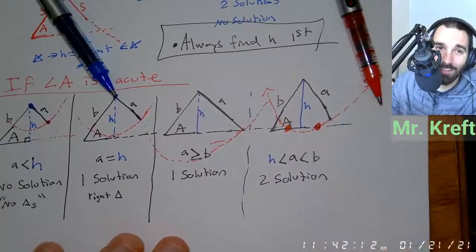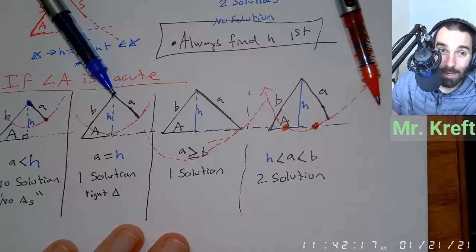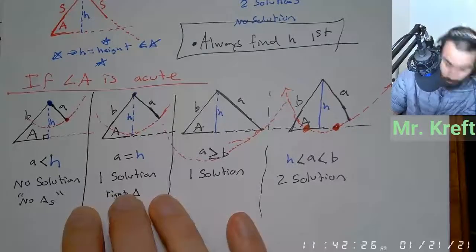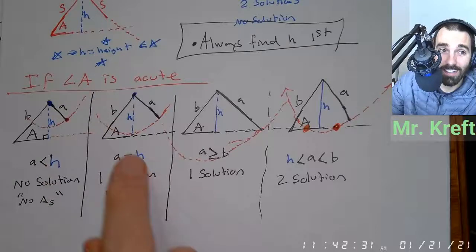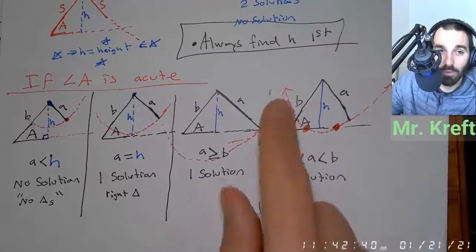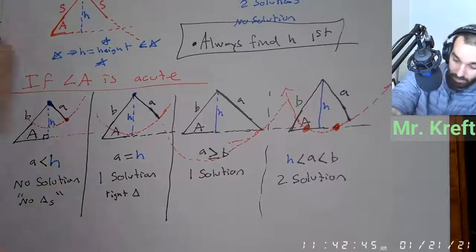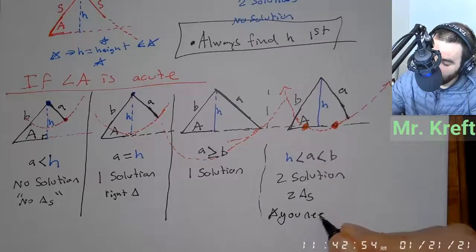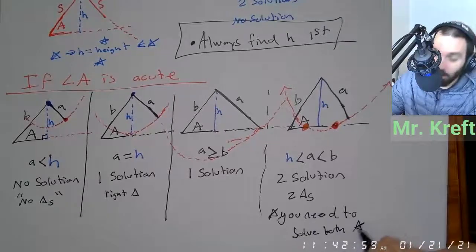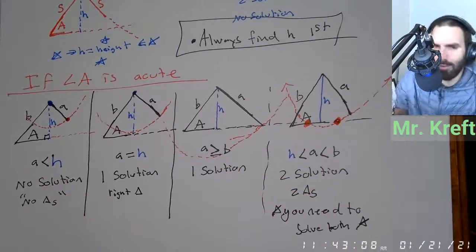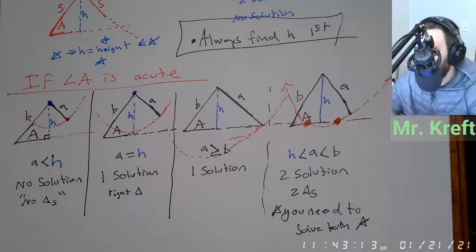I don't have this memorized — I legitimately don't. When we do these problems I'm just going to think through them. This is what's on page 402. If A is longer than H but shorter than B, it's going to have two solutions — two triangles. You need to solve both. So if you get one that has two solutions, you're doing two problems. I'll show you how to set that up.